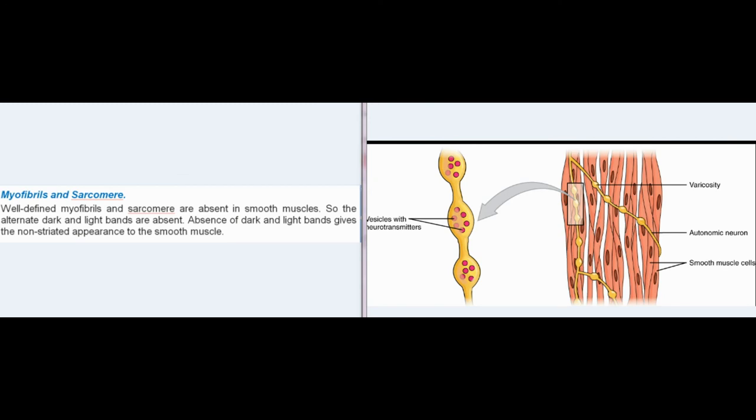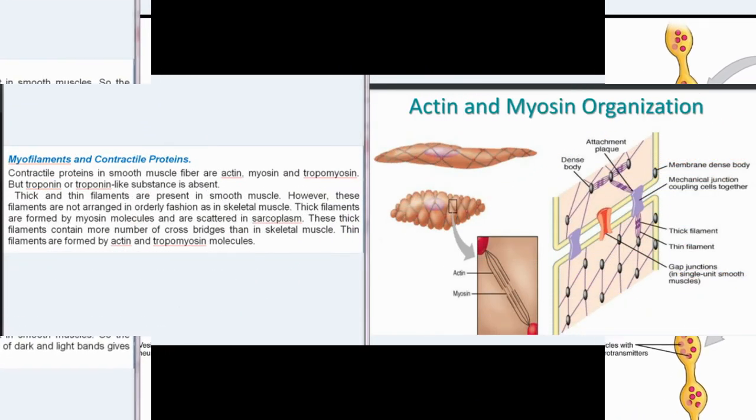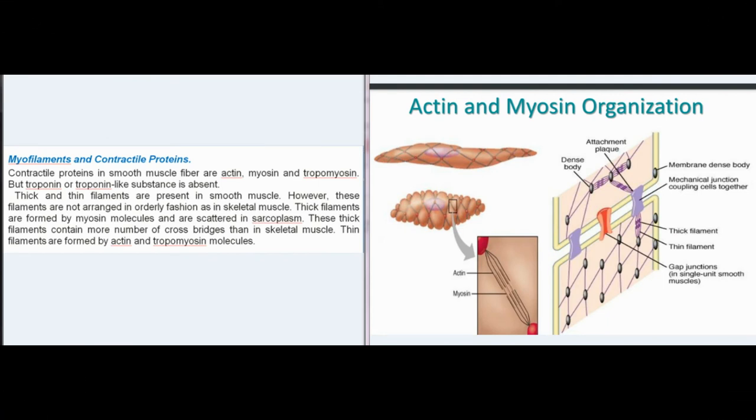Myofibrils and sarcomere: well-defined myofibrils and sarcomere are absent in smooth muscles, so the alternate dark and light bands are absent. Absence of dark and light bands gives the non-striated appearance to the smooth muscle. Myofilaments and contractile proteins.